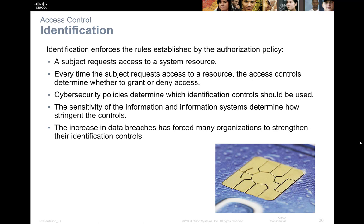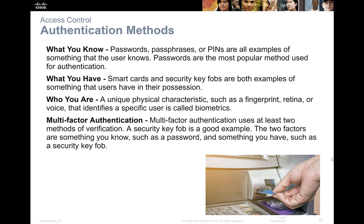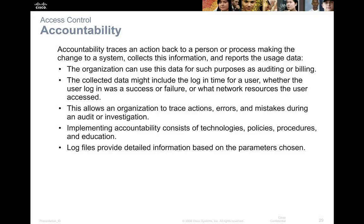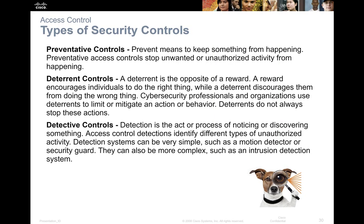Identification — we already talked about that last time — says 'you are who you say you are.' We talked about different forms of multi-factor authentication. Remember, you can't have two of the same thing; they have to be very different. Something you know, something you have, something you are — and sometimes geo-location is used. If you see questions about multi-factor, just remember: it has to be two different categories, like something you know plus something you have.